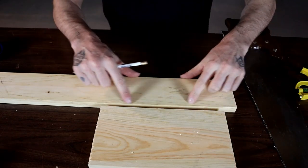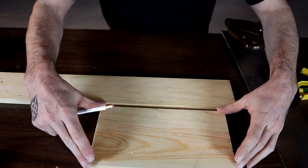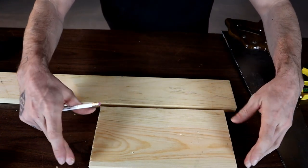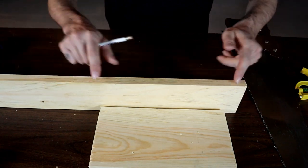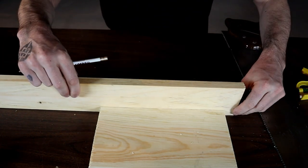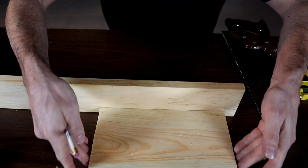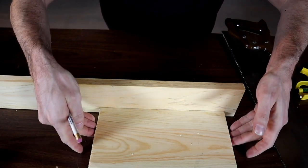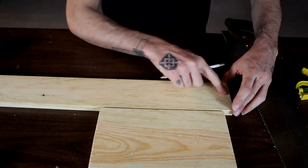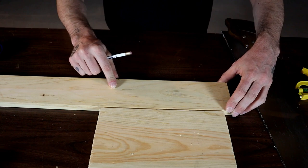Now we've got our bottom cut out. We're going to cut the sides. The bottom is 10 and a half inches long and we're going to make the sides 12 inches, so they stick out three quarters of an inch on each end to hide the ends of the box. We'll measure that out, draw the line, and cut it off.